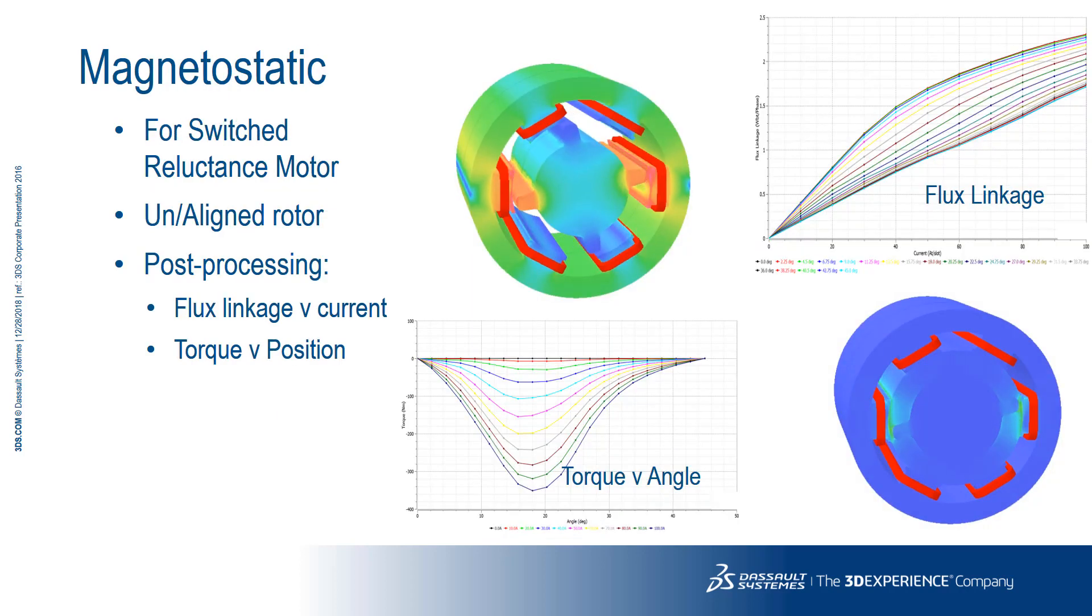The machines environment magnetostatic analysis for SRMs creates a series of static jobs for different rotor positions between the aligned and unaligned rotor positions. The output includes flux linkage versus current for different rotor positions, between aligned and unaligned positions, and torque versus rotor position for different current excitation.